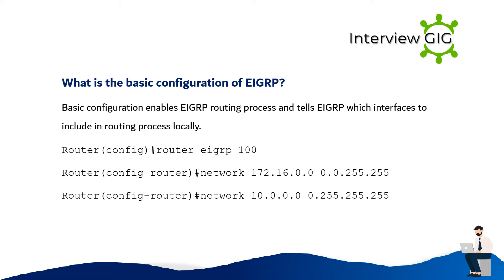What is the basic configuration of EIGRP? Basic configuration enables the EIGRP routing process and tells EIGRP which interfaces to include in the routing process locally. Router# router eigrp 100. Router# network 172.16.0.0 0.0.255.255. Router# network 10.0.0.0 0.255.255.255.